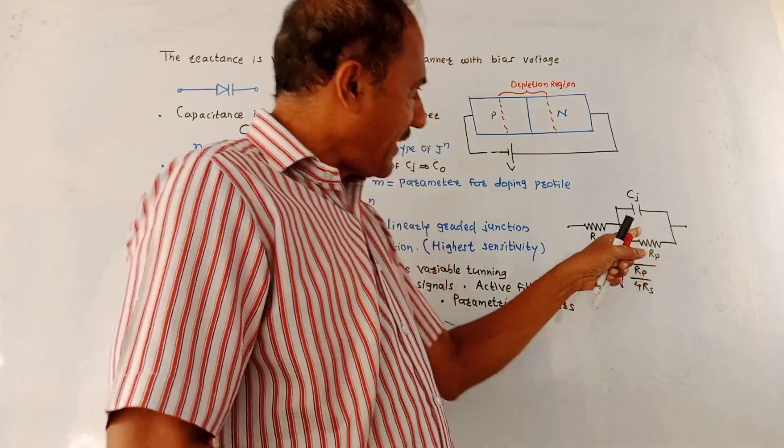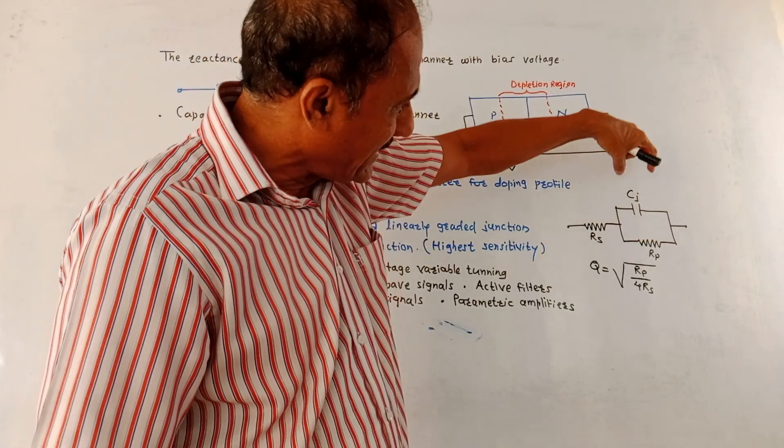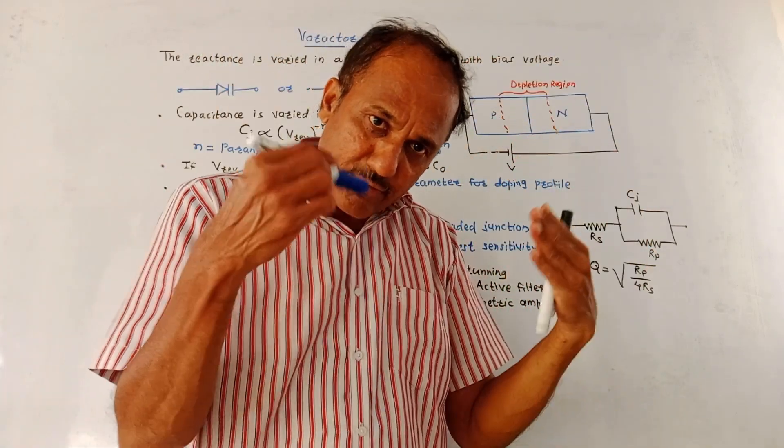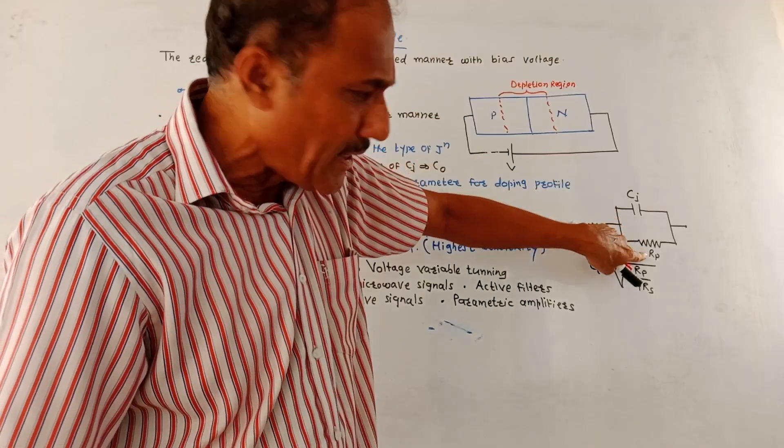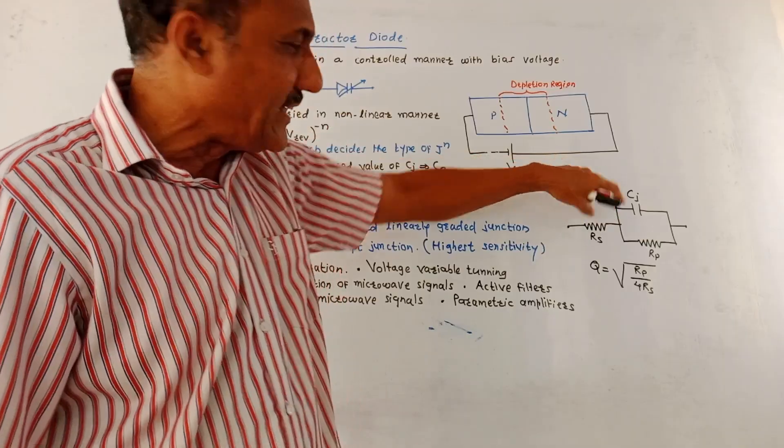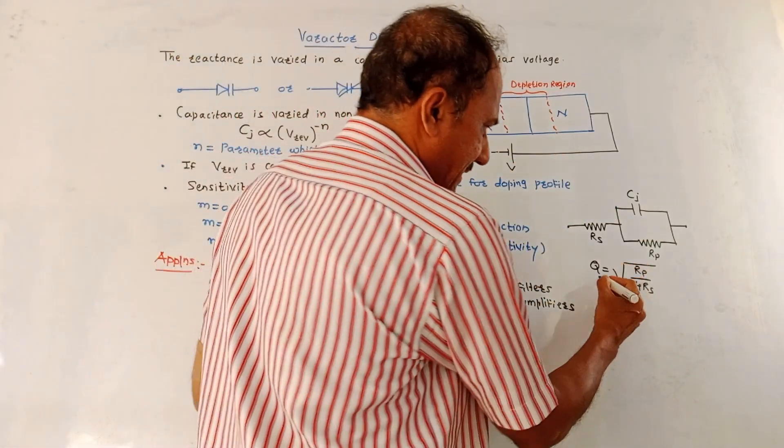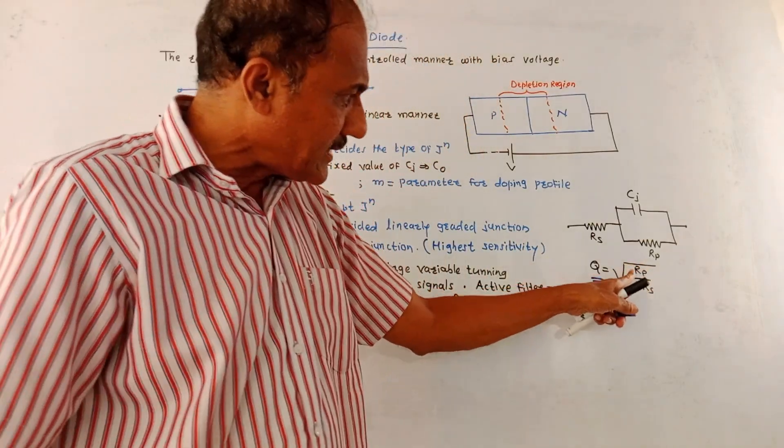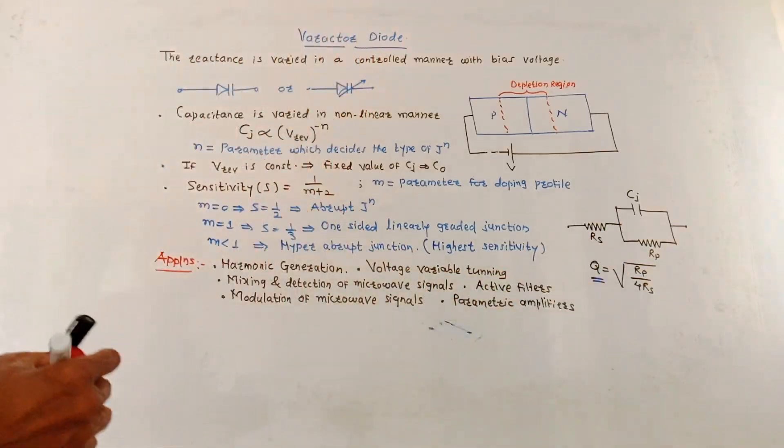This is the equivalent circuit of the varactor diode. RS is the series resistance, RP is the parallel resistance, CJ is the junction capacitance. As you go on increasing the reverse bias voltage, value of CJ junction capacitance and parallel resistor goes on reducing, but value of series resistance goes on increasing. The quality factor Q of the device is given by the formula square root of RP upon 4 RS, where RP is parallel resistor, RS is resistor connected in series.